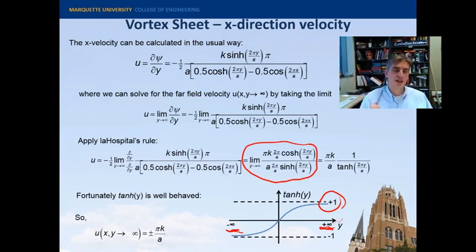So that makes sense. It's the ratio of the strength of the vortex to the spacing of the vortex. And it's plus and minus because on the top, the shear layer is moving towards the left, or in the negative x direction, and on the bottom, it's moving in the positive x direction. All right, so that is the x direction velocity.